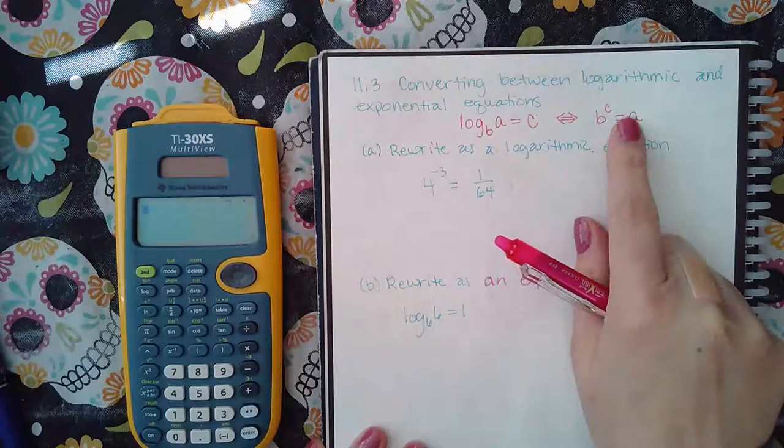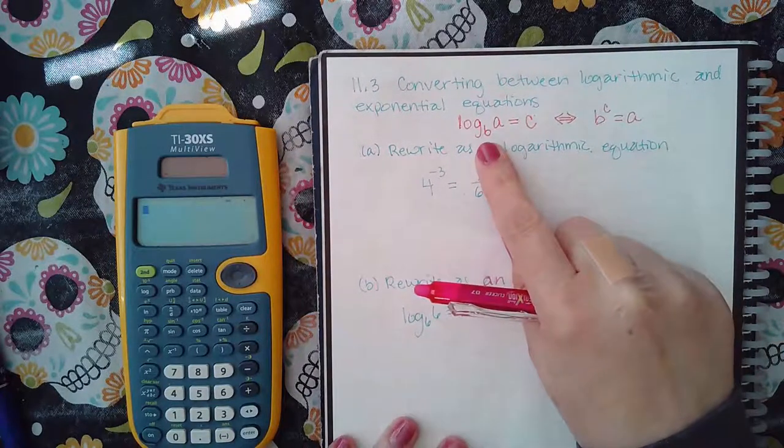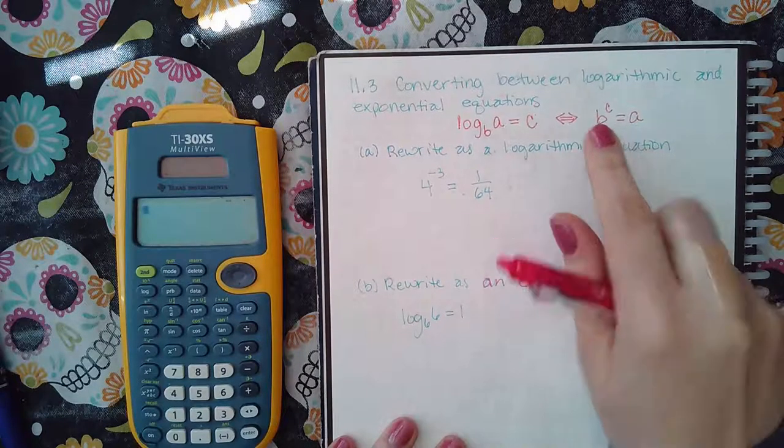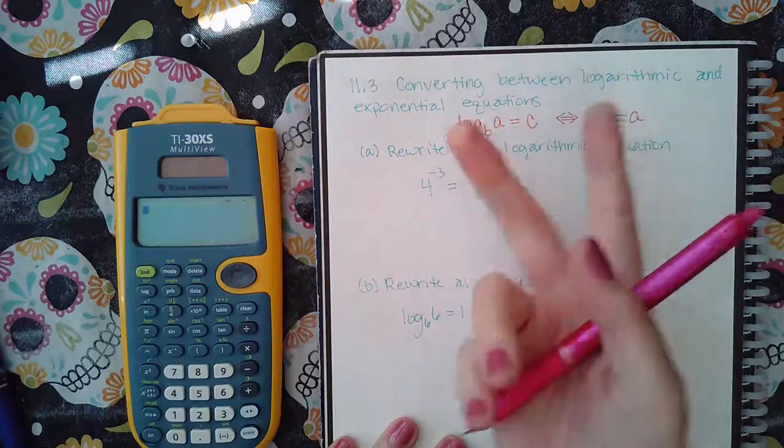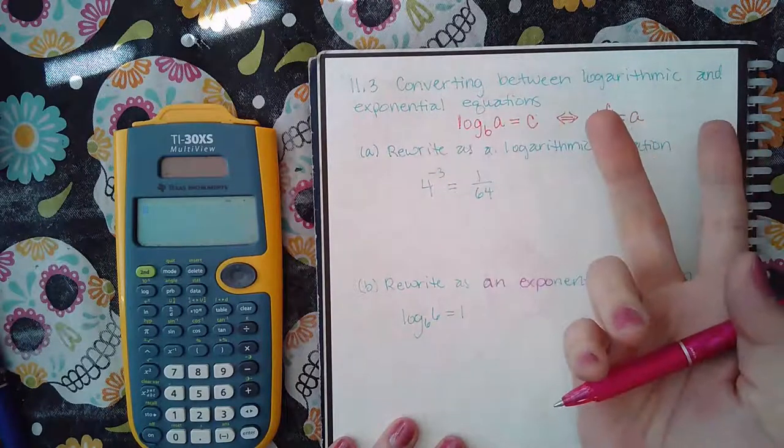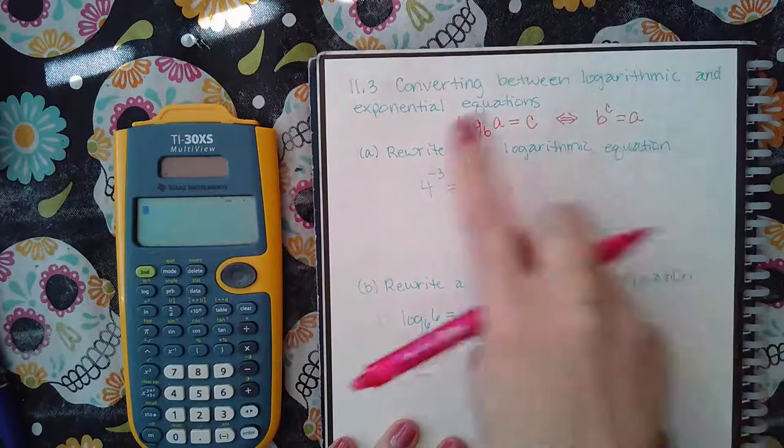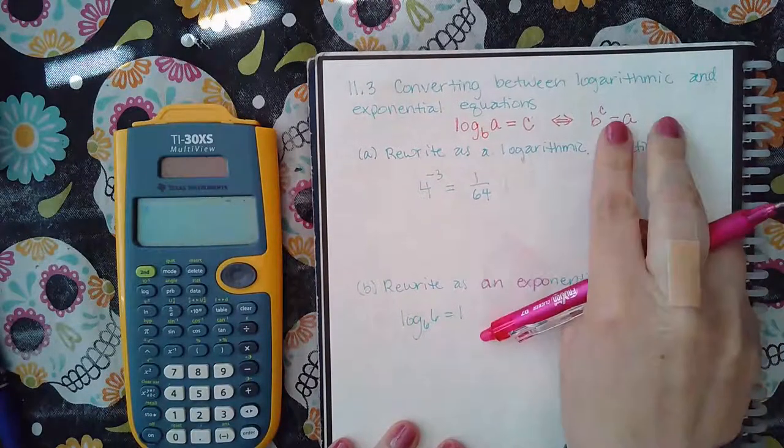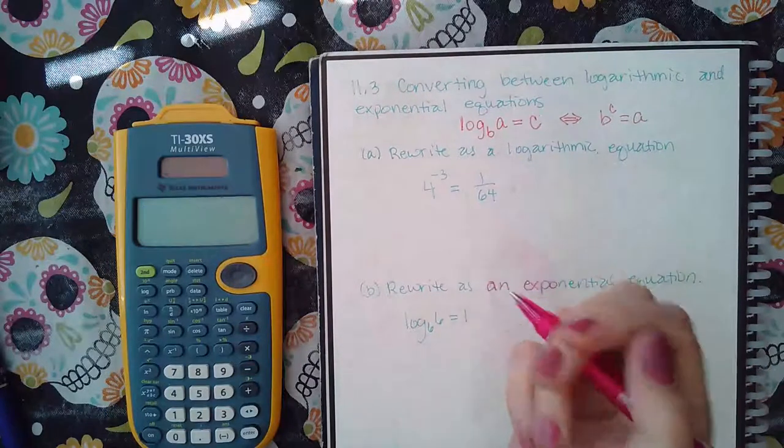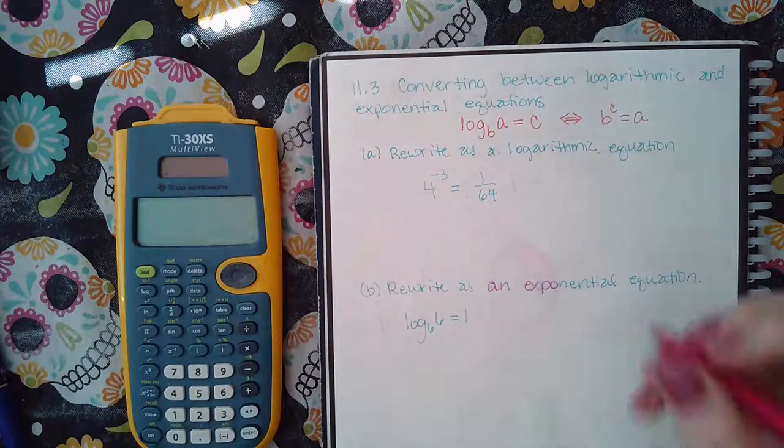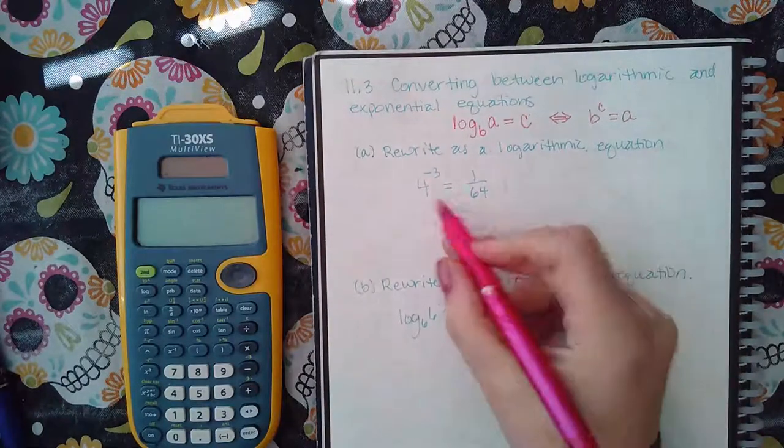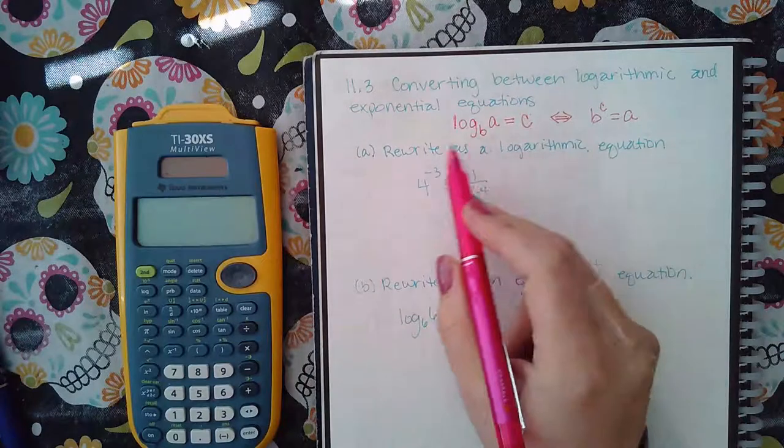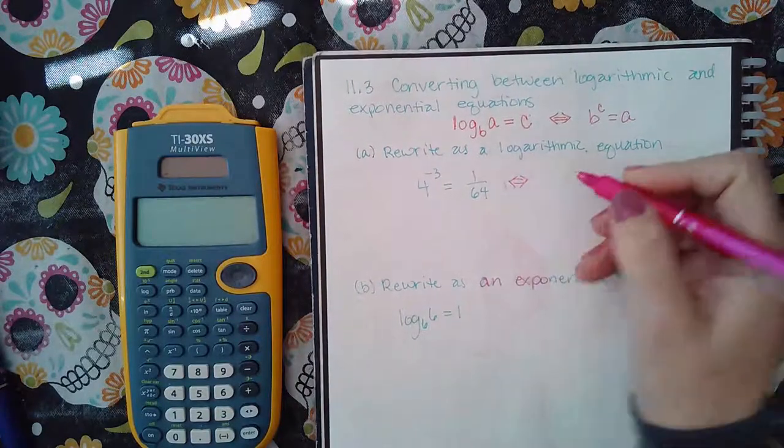Another way I like to describe how these get switched is I always say the base will stay the base, and then the a and the c will switch sides from the equal sign. Notice here the base is on the left side of the equal sign, and the base is still on the left side of the equal sign, but the a and the c switch sides over that equal sign. Here, if I look at this, this is an exponential expression because there's no logs. I want to convert this into a logarithm.